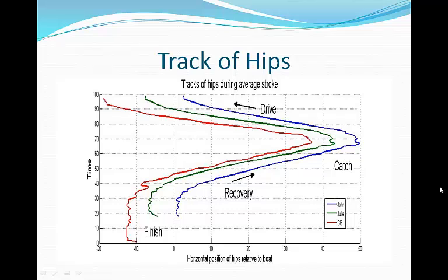This graph shows the track of our hips with respect to the boat, so this shows the leg drive. Since time is on the y-axis and the position of the hips is on the x-axis, the inverse of the slope of the lines gives the speed of the leg drive. All of our leg drives are pretty similar. The speed of the hips is faster during the drive than the recovery, as expected, shown by a less steep line for the drive compared to the recovery. The only noticeable difference is the amount of time spent holding the legs down at the finish. The Britons' red line remains vertical for much longer than John's or mine, indicating no motion of the hips — i.e., holding down the legs.